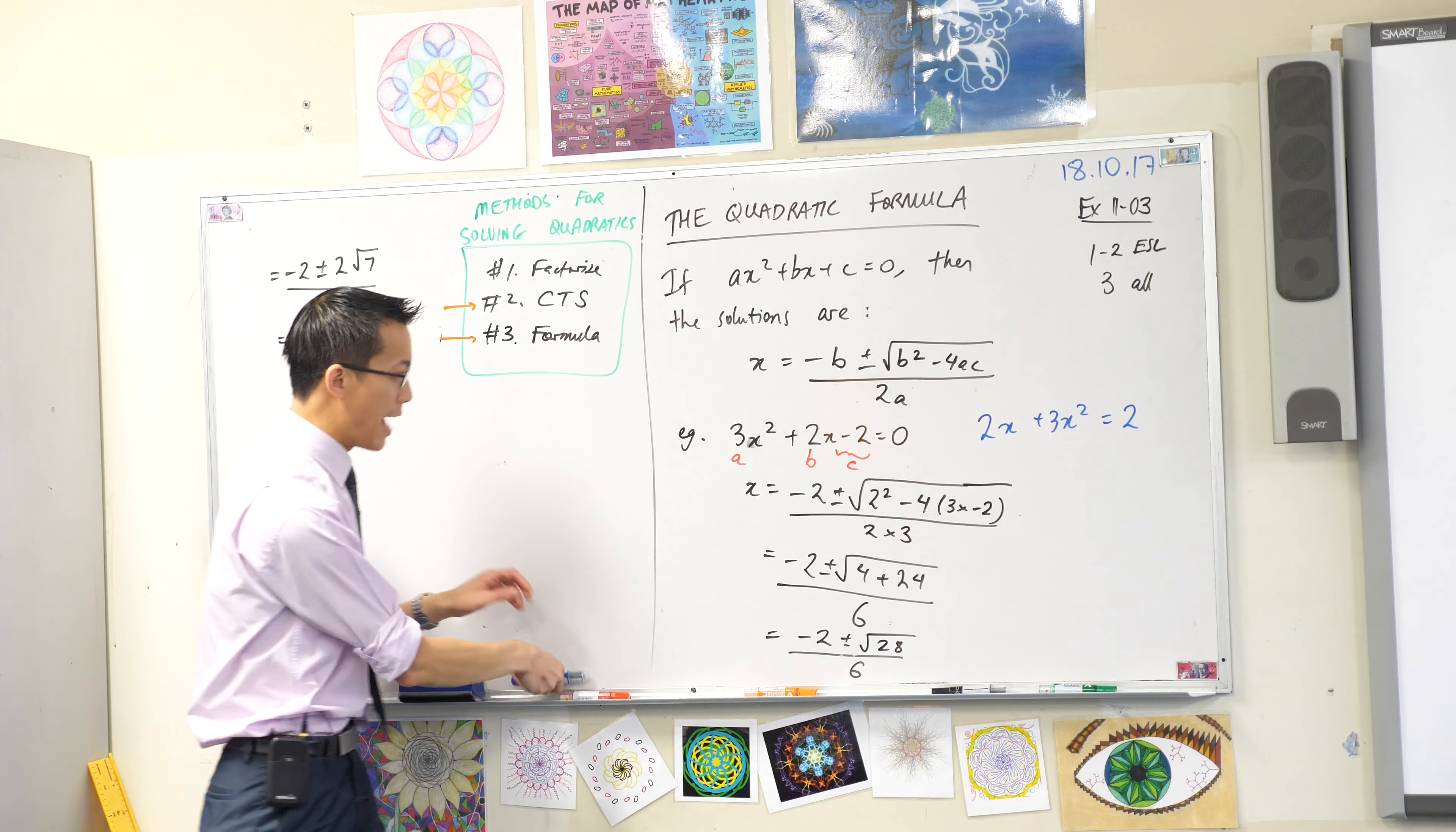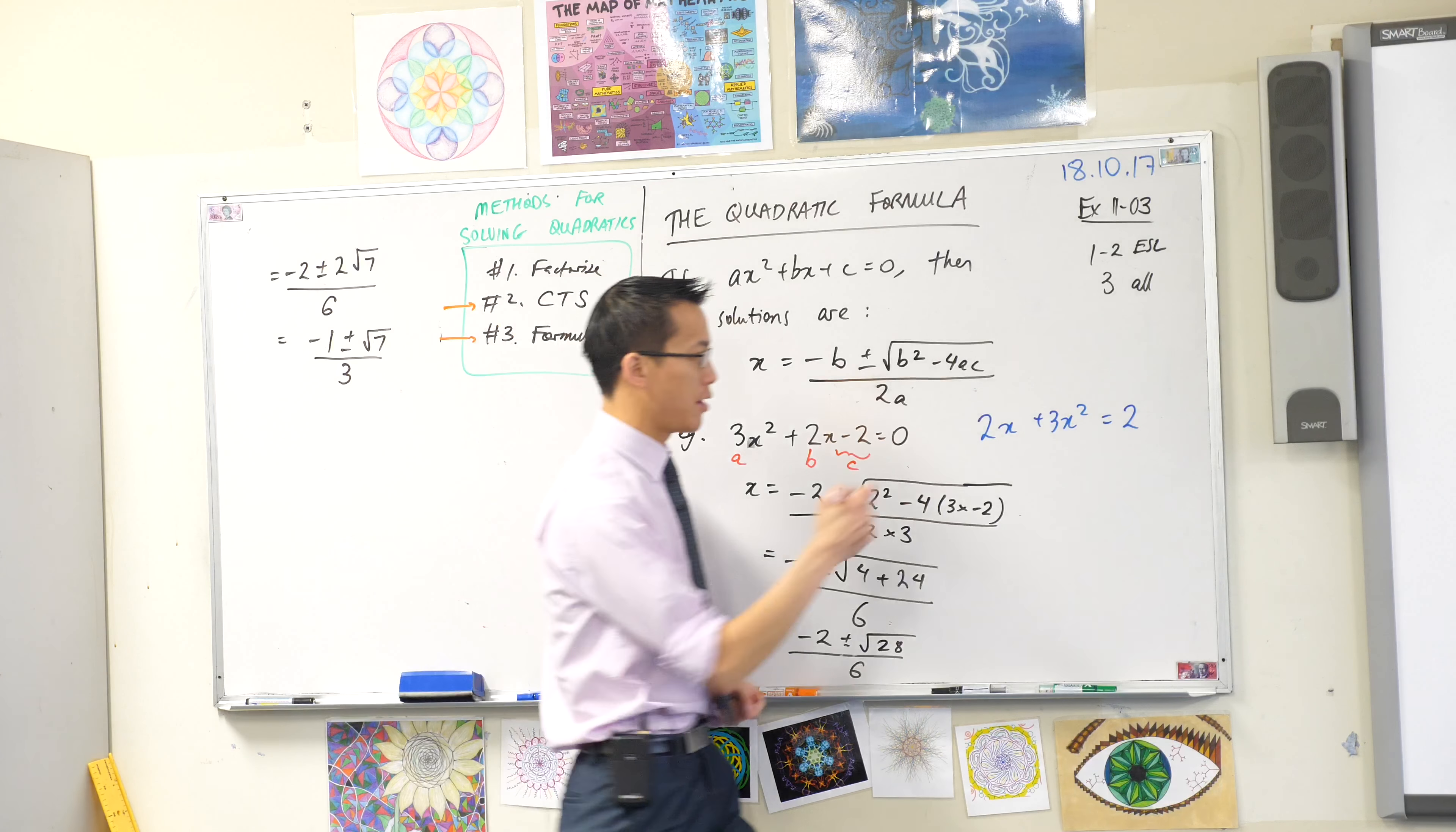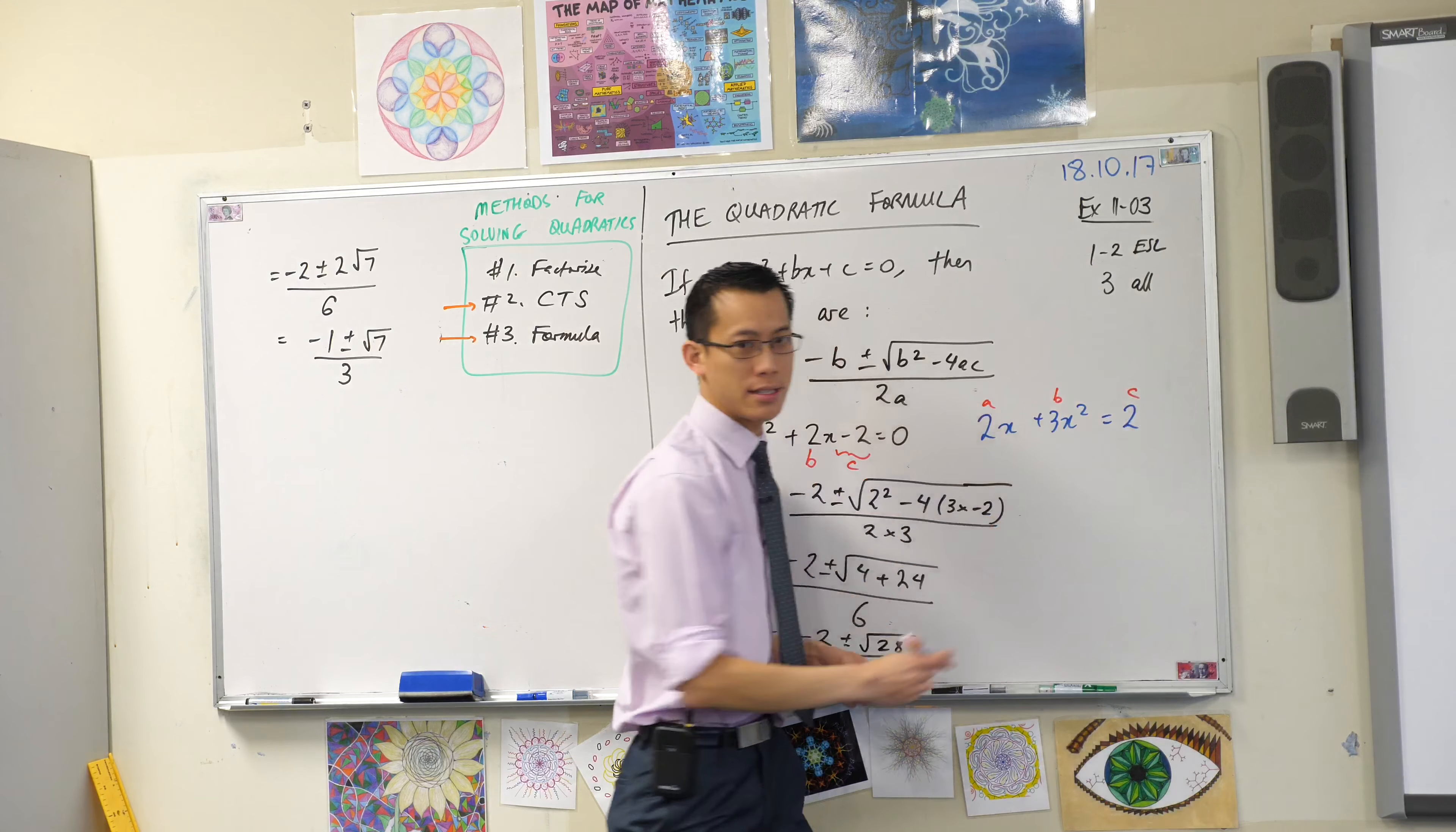So a lot of students will look at this and they'll say I'm looking for a, b, and c and they'll just look at them in order. They'll say I'll make that a, that b, and that's c.